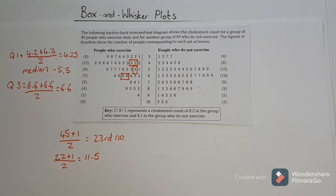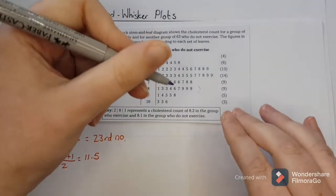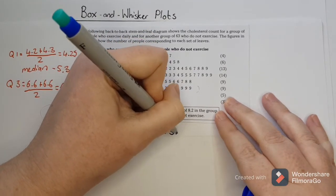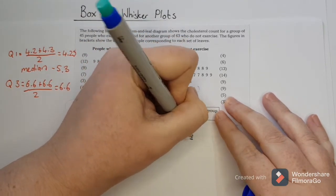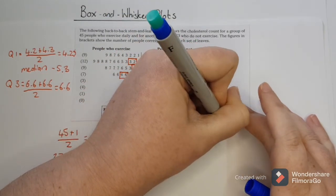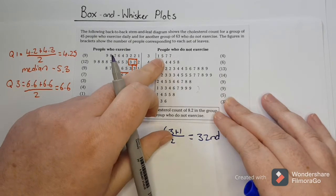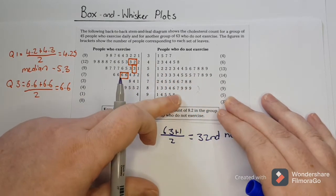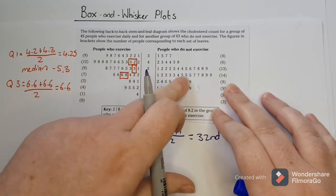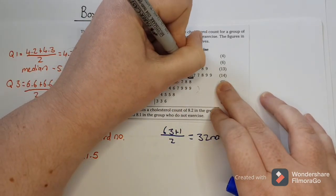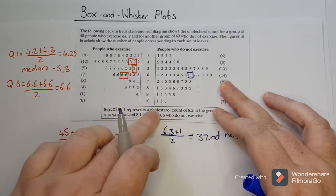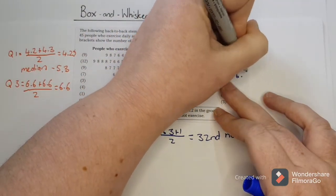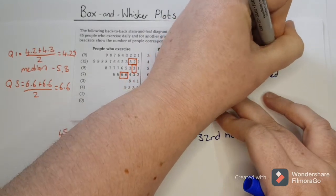So then I need to do the exact same thing on the other side. On the other side, I've now got 63 numbers. So 63 plus 1 divided by 2 means I'm looking for the 32nd number. Counting from here I find the 32nd number, and using my key I know that means this is 6.5 — that is then the median.